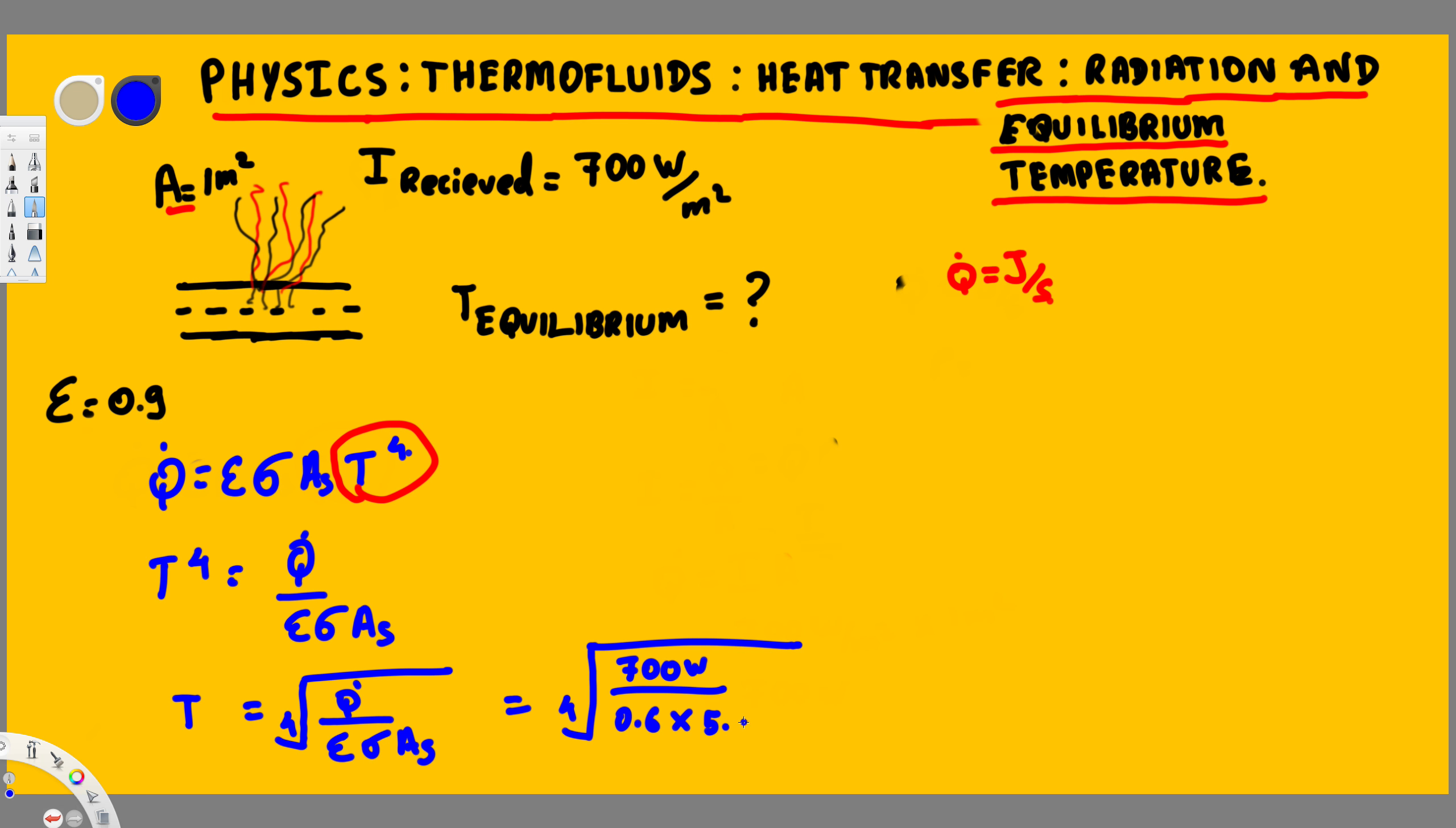700 watts over epsilon is given as 0.9, and sigma is the Stefan-Boltzmann constant that's always going to be the same value, that is 5.69 times 10 to the power of minus 8 watts per meter square Kelvin. Then we have surface area that is just 1 meter square.